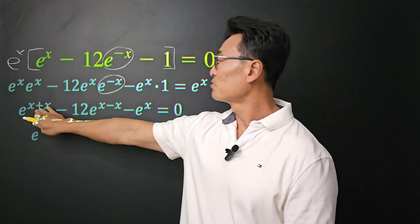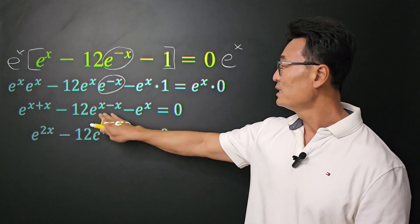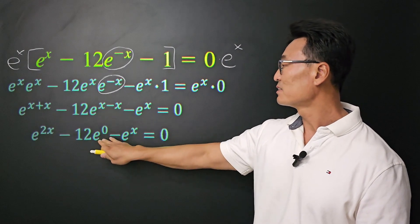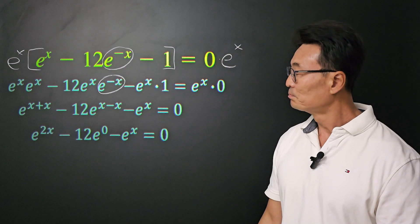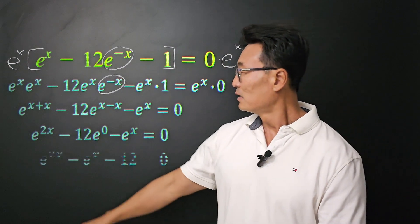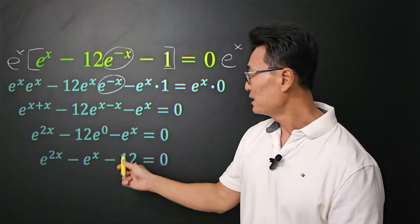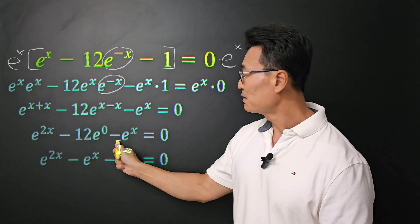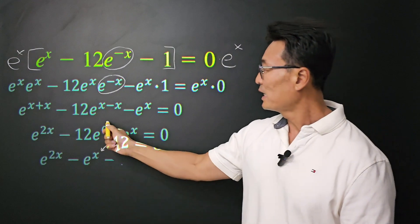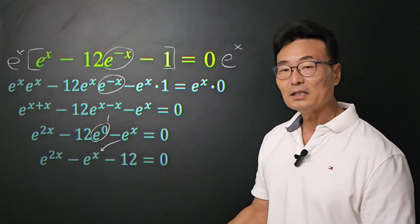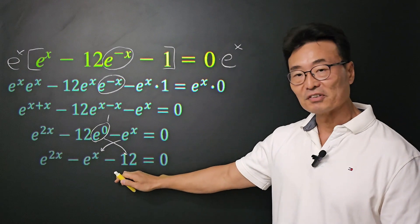Then, x plus x is 2x. And then x minus x gives us the 0 power. And we still have that e to the x. Next, we have e to the 2x in the front, and I decided to put that negative e to the x here in the middle position. And e to the 0 is 1, so I decided to put the 12 in the third position.